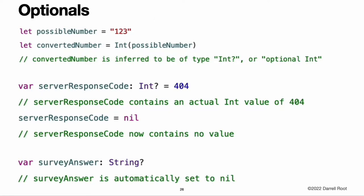The concept of optionals does not exist in C or Objective-C. The nearest thing in Objective-C is the ability to return nil from a method that would otherwise return an object, with nil meaning the absence of a valid object. However, this only works for objects. It does not work for structures, basic C types, or enumeration values.